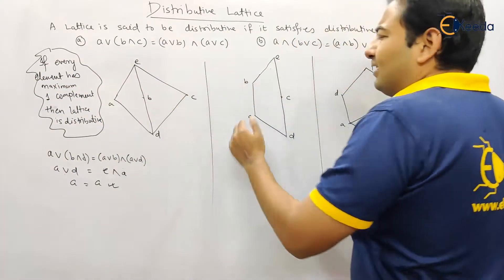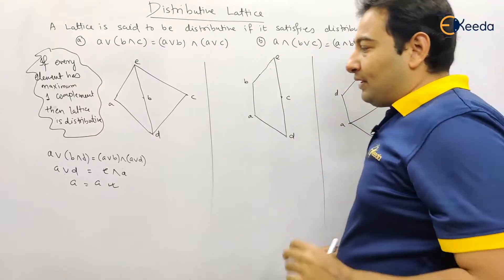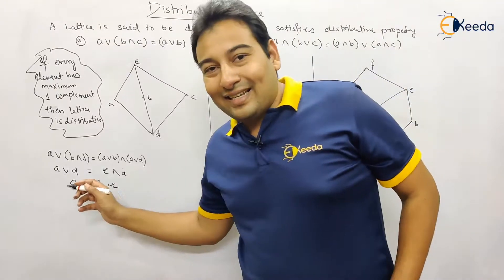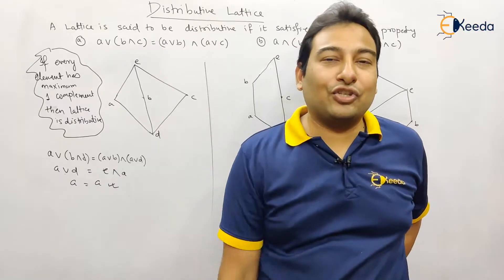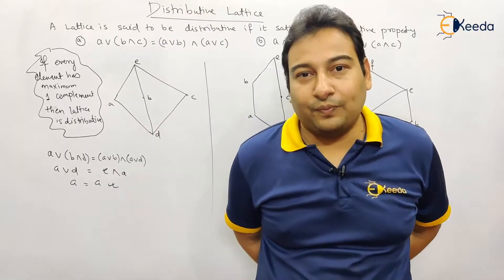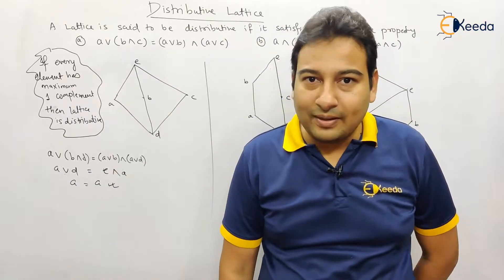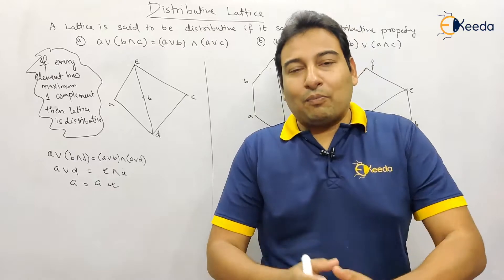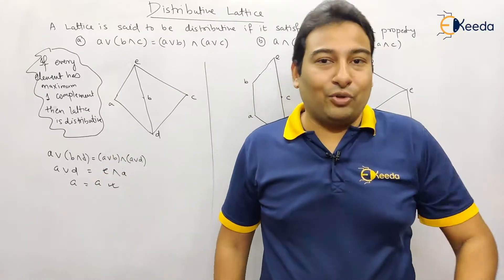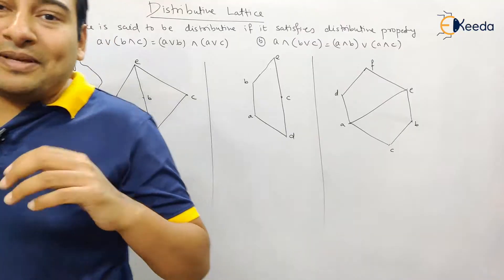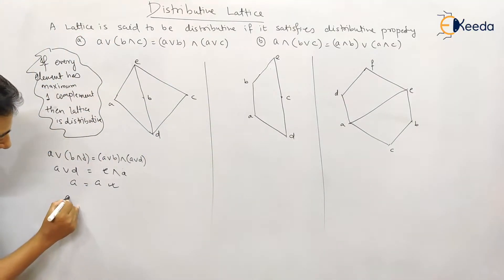You can check the similar way for the other property. Since it appears to satisfy the distributive property, you might conclude the lattice is distributive. But actually this lattice is not distributive. Why not? Let us check with the a, b, c pair.